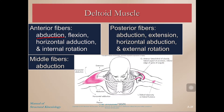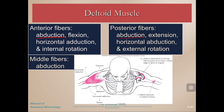You might be wondering: how does the anterior deltoid do abduction if it's on the front? Well, the posterior fibers also do abduction, but then everything else is the opposite. So they both do abduction, but instead of flexion, the posterior fibers do extension, and instead of horizontal adduction, they do horizontal abduction.